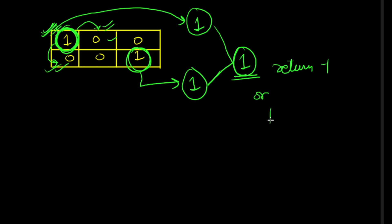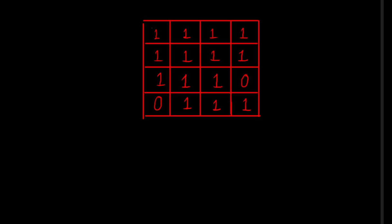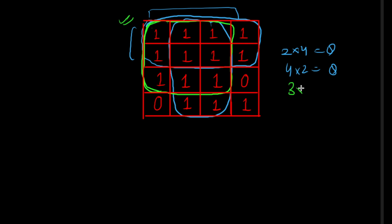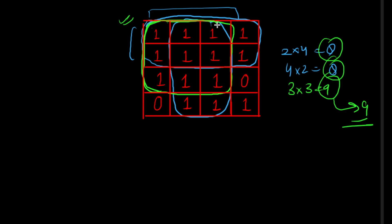Now coming to the second input: we try to form sub-matrices. The first one can be a 2×4 region with size eight, another can be 4×2 with size eight, and another can be 3×3 with size nine. Since we are dealing with the largest sub-matrix, we take the maximum of all, which is nine.